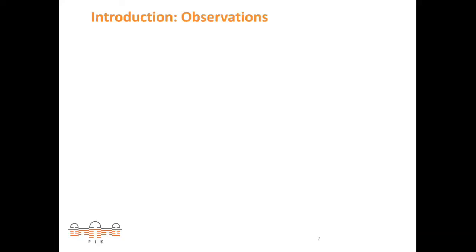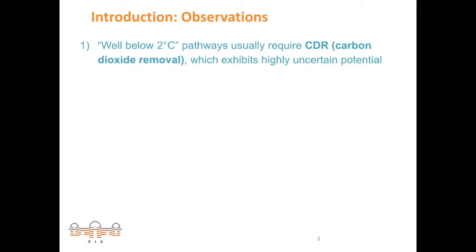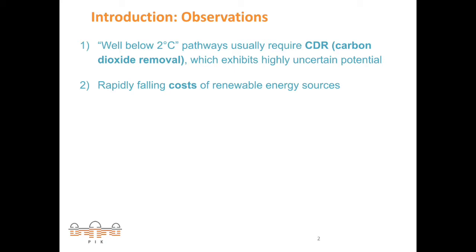I will start off with some observations. Well-below-2-degrees pathways usually require carbon dioxide removal, which in turn exhibits highly uncertain potential. At the same time, the energy sector, which is responsible for the biggest part of emissions, shows rapidly falling costs of renewable energy sources. In many world regions, the current levelized cost of electricity is smaller than the long-run marginal cost of coal power plants, meaning it is cheaper to start new renewable capacity from scratch than keep old coal capacity running.